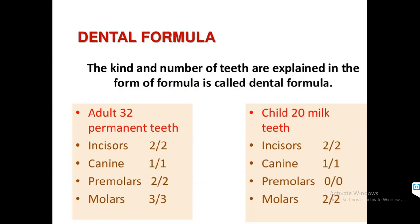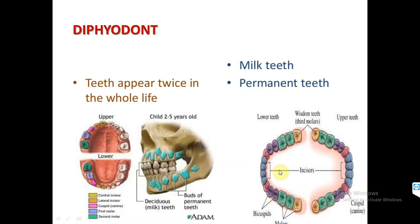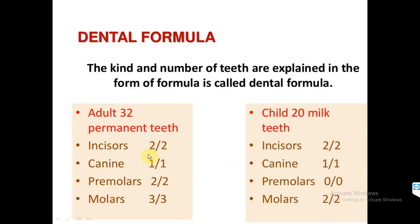What is the dental formula? The kind and number of teeth explained in the form of a formula is called the dental formula. Adults have 32 teeth — the permanent teeth. Incisors are 2/2, meaning two in the upper jaw and two in the lower. Canines are 1/1, premolars 2/2, and molars 3/3. In a child, there are only 20 milk teeth: incisors 2/2, canines 1/1, but premolars are absent — that is why the number decreased from 32 to 20.